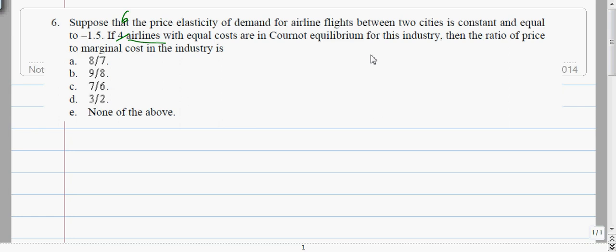So the way to find a Cournot equilibrium, there are two ways. The first one is like the MR equal to MC way. So that one we usually call the best response method, which we will do later, I think.